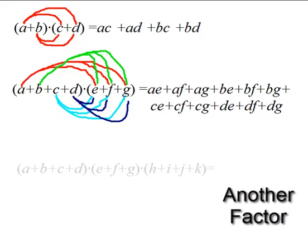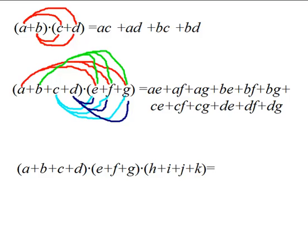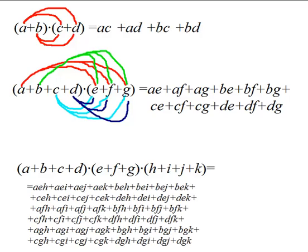Now we'll insert another factor to make it even more complicated. a plus b plus c plus d times e plus f plus g times h plus i plus j plus k. If we did all of the distributing here, we'd get a very large expression. Now you probably won't have to do anything this tedious, but again you should be able to read this expression and understand the pattern.